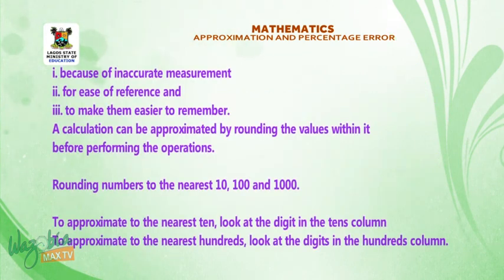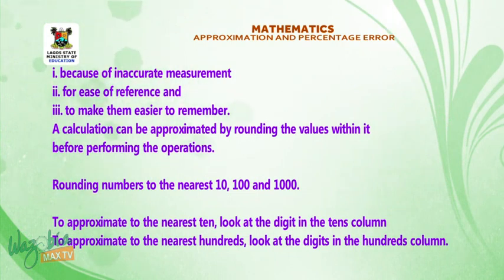Numbers are approximated for various reasons: 1. Because of inaccurate measurements. 2. For ease of reference. 3. To make them easier to remember. A calculation can be approximated by rounding the values within it before performing the operations.